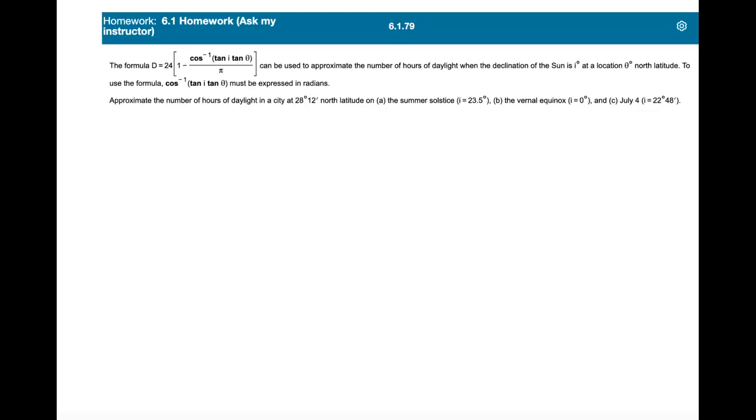One is the declination of the sun, which is this I, so I in the formula is the declination of the sun, and then the other part is at a location theta, so the location theta that appears here in the formula.